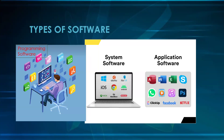There are three types of software: system software, programming software, and application software. System software is used for managing hardware — it's a computer program designed to provide a platform for running application software and managing computer hardware resources. Examples include operating systems like Windows and Android, device drivers like keypads and mice, firmware, and utilities.